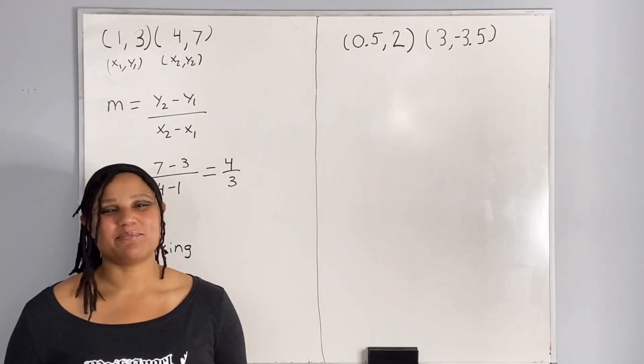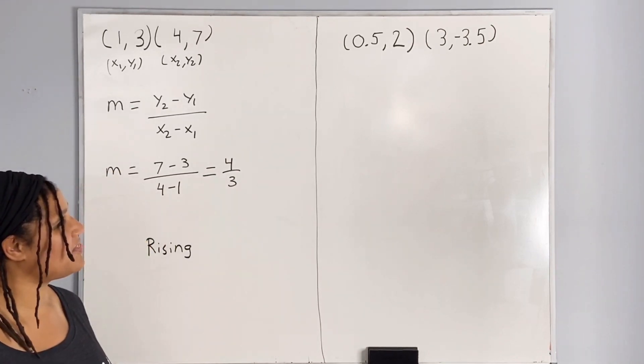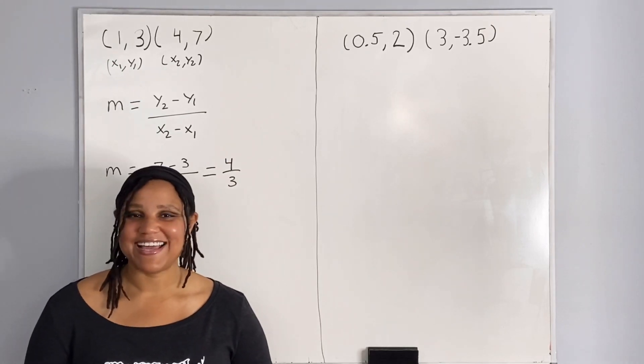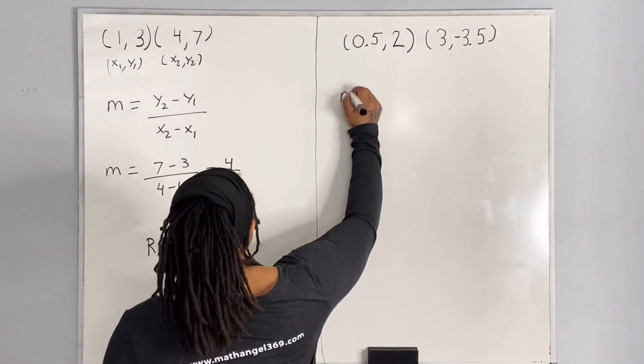Now let's look at our second problem. We have the point (0.5, 2) and the point (3, -3.5). And we want to find the slope of the line given the pair of points. So I'm going to write out the formula.